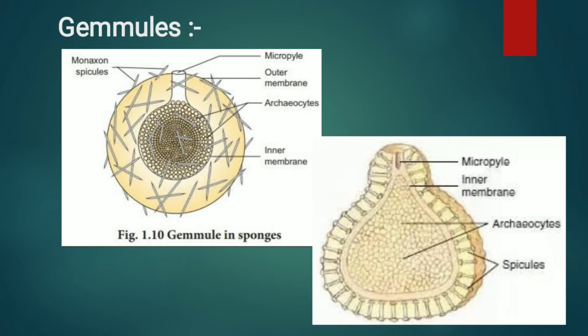Each gemmule is a small hard ball-like structure consisting of an outer capsule and an internal mass of archaeocytes. The capsule is made up of two layers: an inner and an outer chitinous layer. The outer chitinous layer of the capsule contains amphidiscs to strengthen it in some forms, while amphidiscs are absent in other sponges.